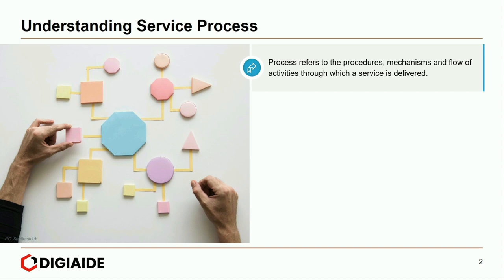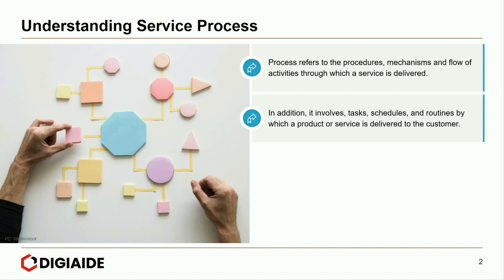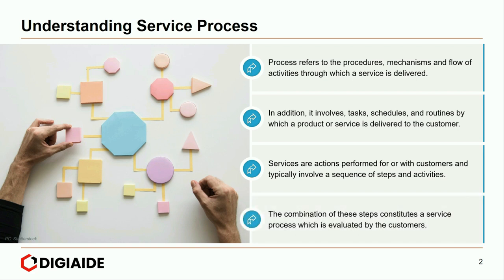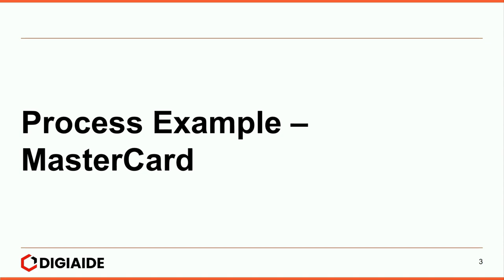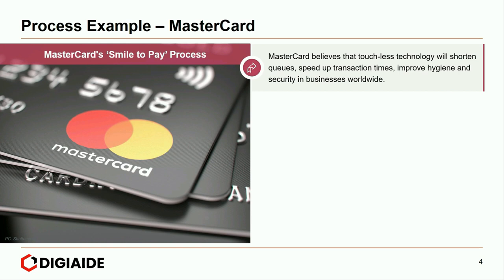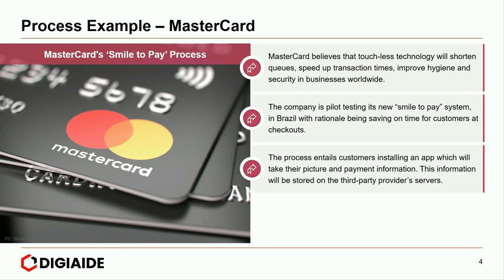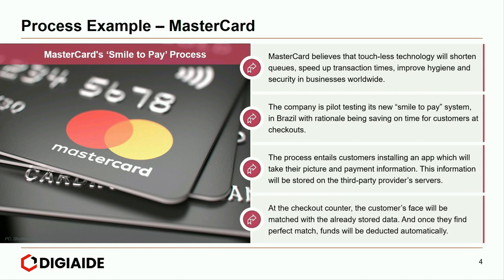Process refers to the procedures, mechanisms and flow of activities through which a service is delivered. In addition, it involves tasks, schedules and routines by which a product or service is delivered to the customer. Services are actions performed for or with customers and typically involve a sequence of steps and activities. The combination of these steps constitutes a service process which is evaluated by customers. Let's look at an example of a process — in this case, the brand Mastercard. Mastercard's Smile-to-Pay process — Mastercard believes that touchless technology will shorten queues, speed up transaction times, and improve hygiene and security. The company is pilot testing its new Smile-to-Pay system in Brazil. The process entails customers installing an app which will take their picture and payment information, stored on the third-party provider's server. At the checkout counter, the customer's face will be matched with the stored data and once a perfect match is found, funds will be deducted automatically.